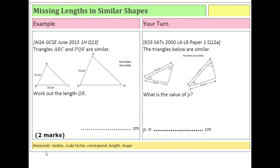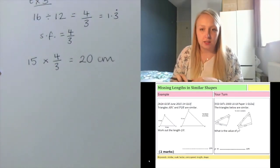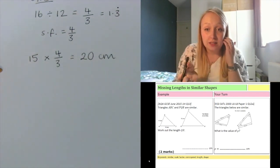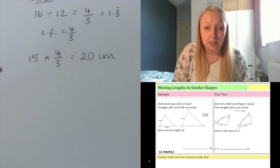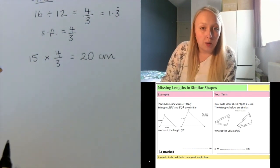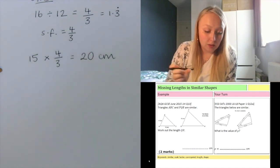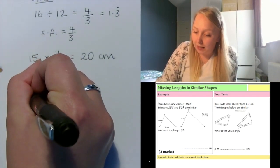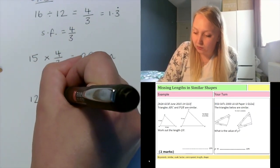Have a look at the question on the right hand side — it's very similar. You've got two triangles. Find out which sides correspond to help you find your scale factor. The corresponding sides are the bases. The bigger shape has a base of 12 centimetres and the smaller one has a base of 8 centimetres. So I find the scale factor by doing 12 divided by 8.